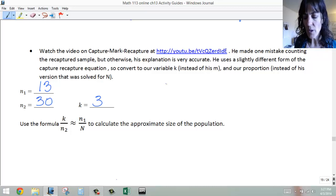So if we plug those in, we have 3, n₂ is 30, equals n₁ is 13 over big N.